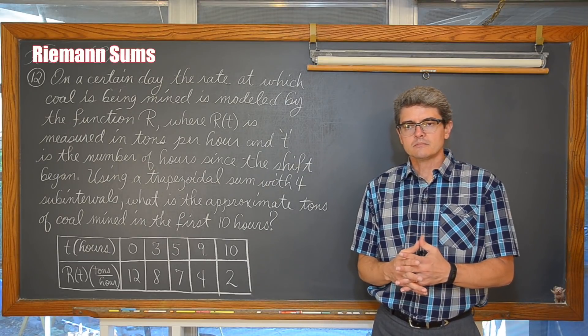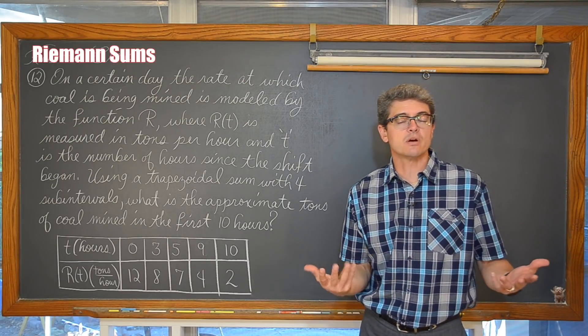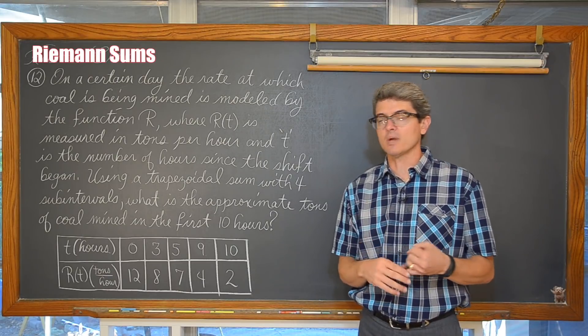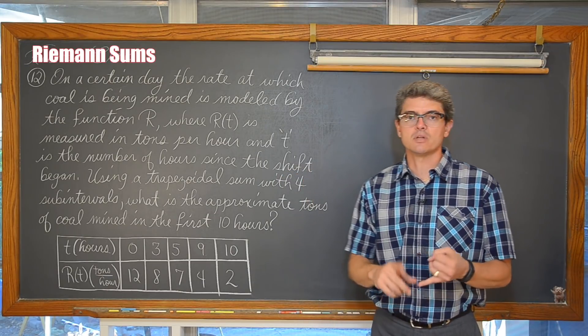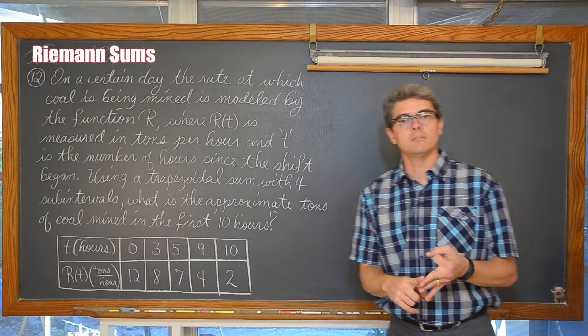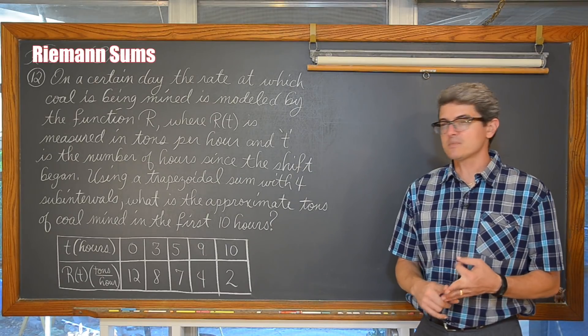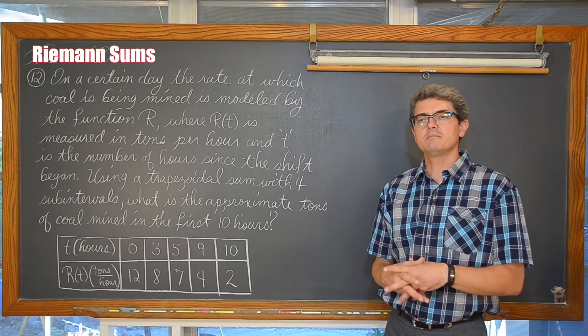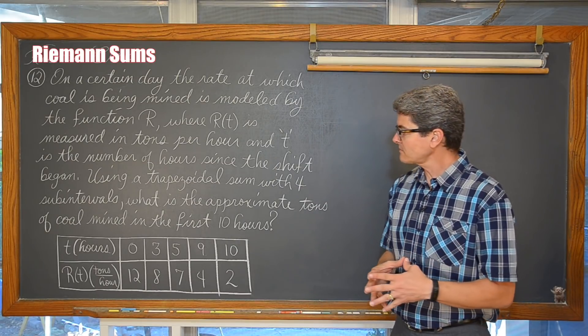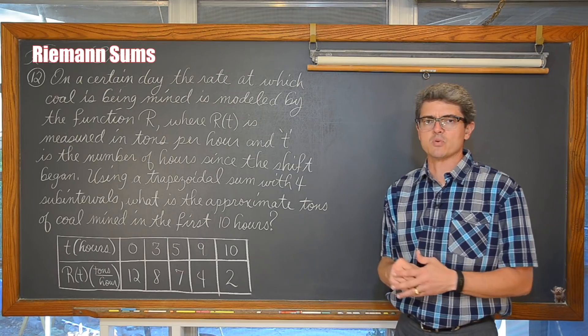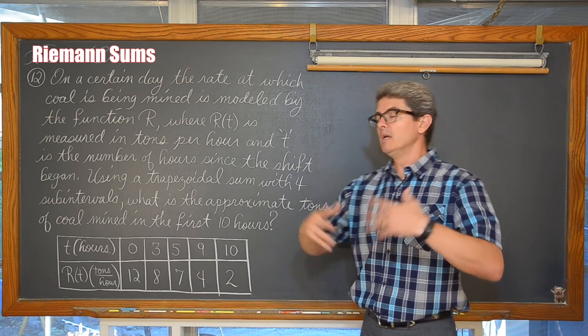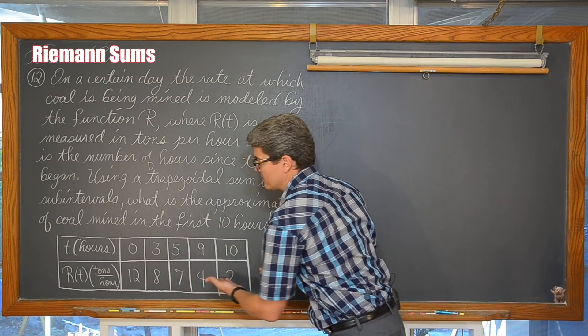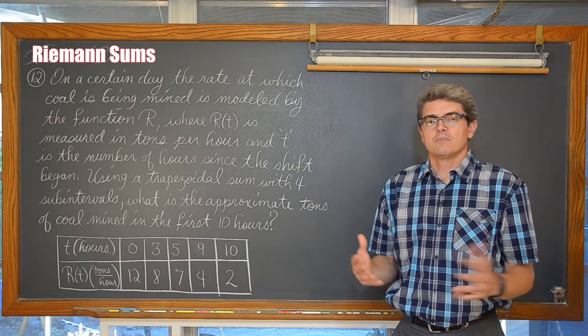Now depending on what your teacher covered in your class, you definitely found rectangular sums using a left and right end point. You might have done some midpoint Riemann sums. Here we have a trapezoidal sum. Even if your teacher didn't necessarily cover Riemann sums using a trapezoidal sum and all the formulas that go with it, when you have this information given to you in a table, all is not lost.